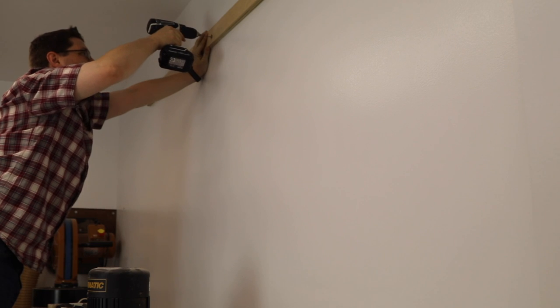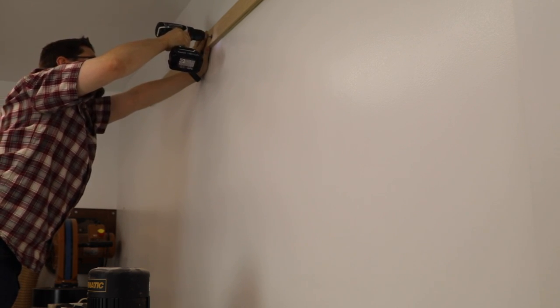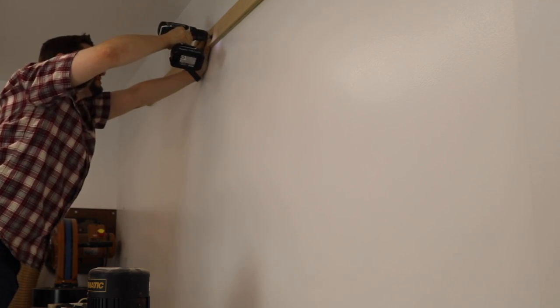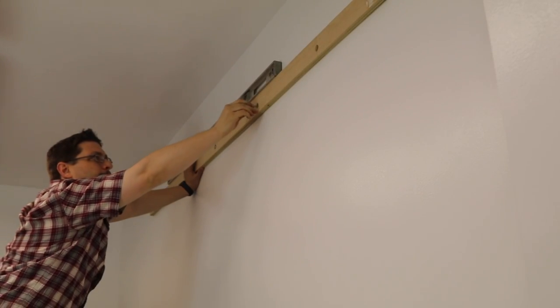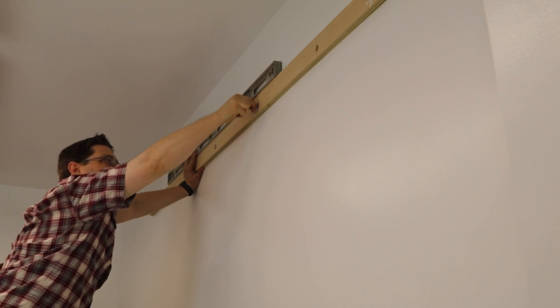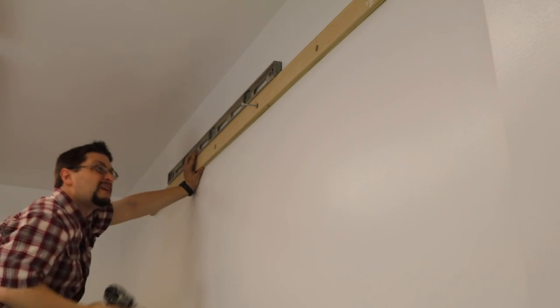And then using the same drill bit I used at the drill press I bring my French cleat up to the wall and drill my first pilot hole in and then put my first screw in. And with my level I level the rest of the piece and then drill and screw in the rest of the French cleat.